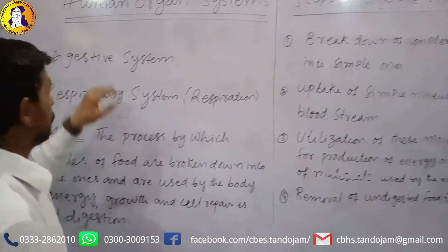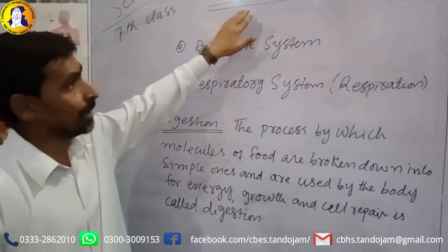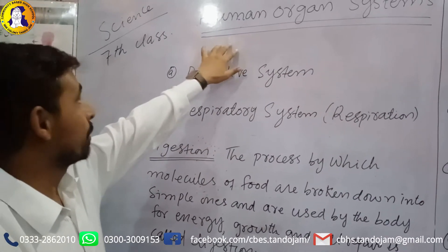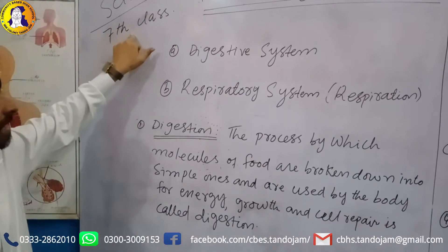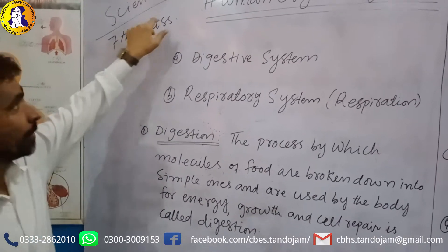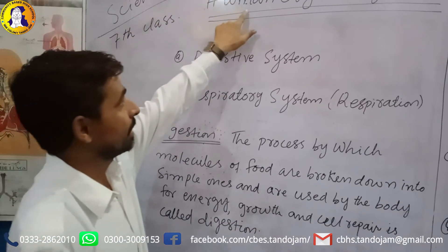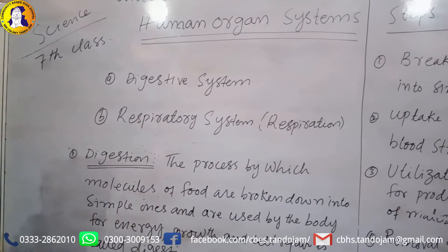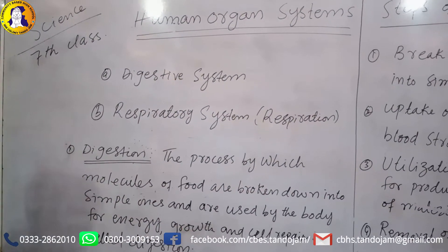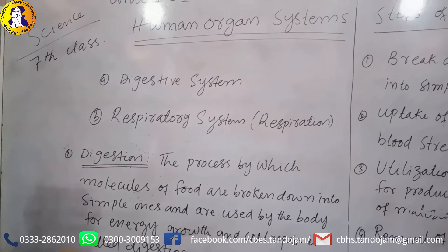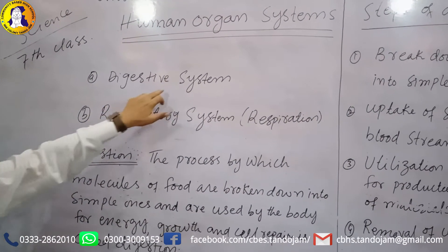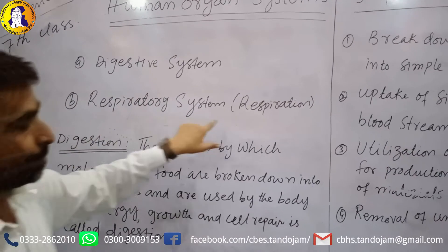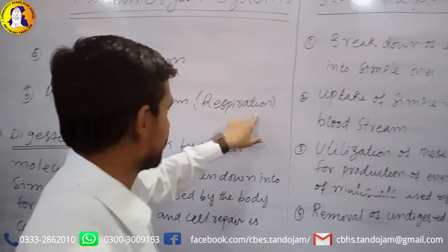Today we are going to discuss the human organ system. This is the topic of Class 7 Science, Chapter 1. In this chapter we will discuss two systems: the digestive system and the respiratory system, or simply, respiration.